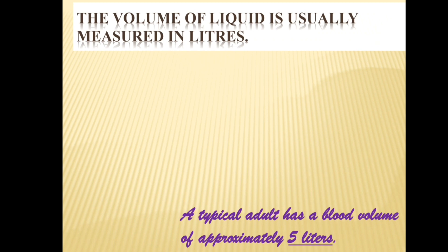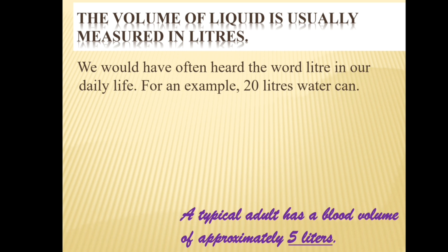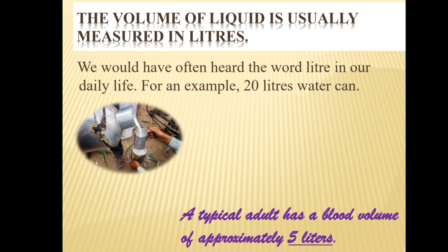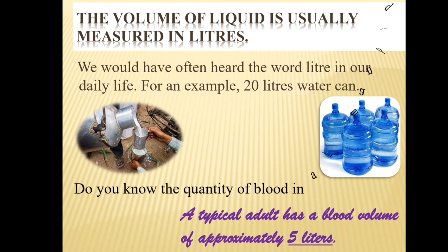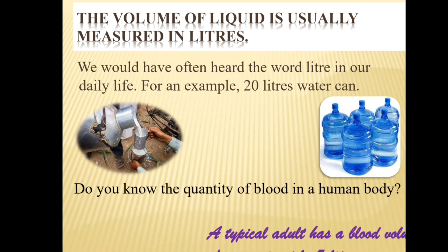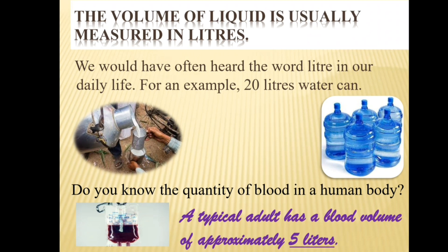The volume of a liquid is usually measured in liters. We often hear the word liter in daily life - for example, 20 liters of water, a container of milk, a can of coke, a can of paint, or one liter of oil. All these things are measured in liters. Do you know the quantity of blood in a human body? A typical adult has a blood volume of approximately 5 liters.